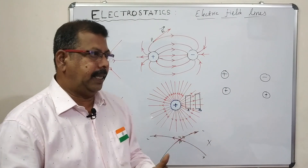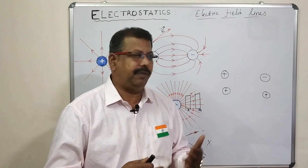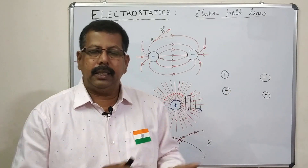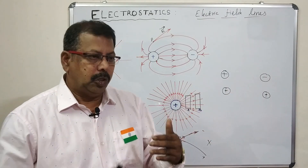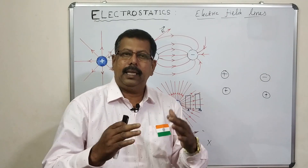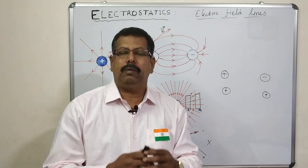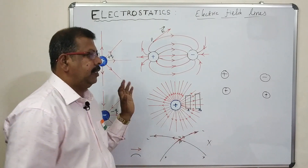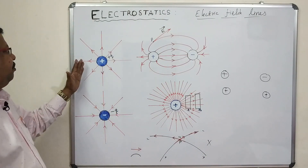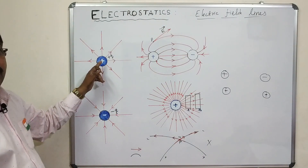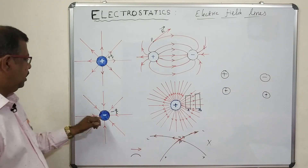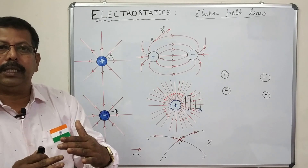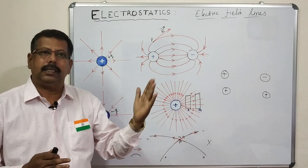If you want to draw these electric field lines, you should follow some rules. The first rule: the electric field line starts from positive charges and ends at negative charges.